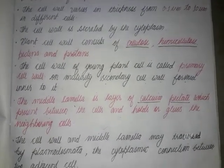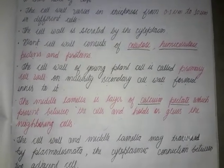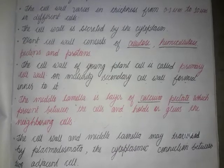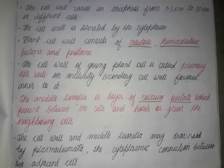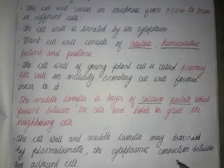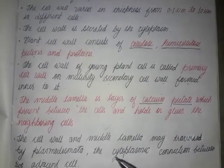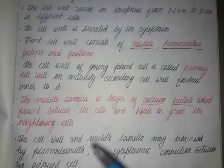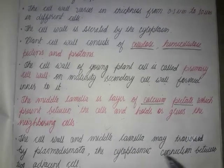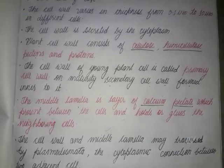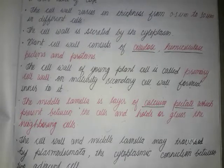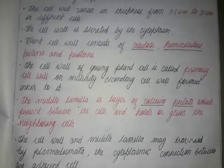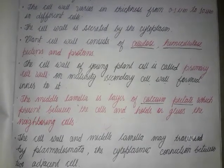Next point: the cell wall and the middle lamella are traversed by plasmodesmata. This means the cell wall is not a continuous structure — it has gaps, and these gaps are known as plasmodesmata. They are also called cytoplasmic connections.